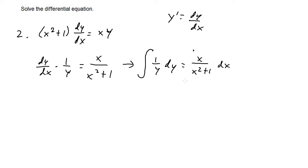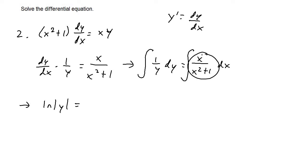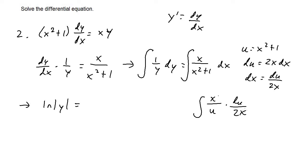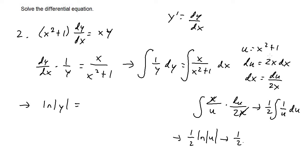Now we can integrate both sides since we have separated the variables. The integral of one over y dy is ln|y|. For the right side, the integral of x over x² + 1 dx requires u-substitution. If u equals x² + 1, then du equals 2x dx, so dx equals du over 2x. Substituting in, the x's cancel and we get one half times the integral of one over u du, which equals one half times ln|u|, or one half ln|x² + 1|.